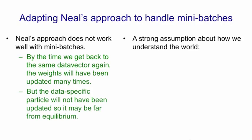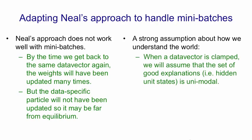We can overcome this by making a strong assumption — a kind of epistemological assumption. We're going to assume that when a data vector is clamped, the set of good explanations — states of the hidden units that act as interpretations of that data vector — is unimodal. That means for a given data vector, there aren't two very different explanations. We assume that for sensory input there's one correct explanation, and if we have a good model of the data, our model will give us one energy minimum for that data point.